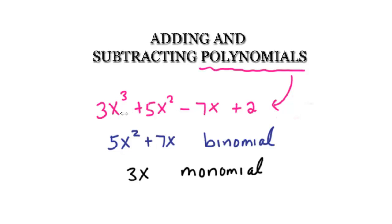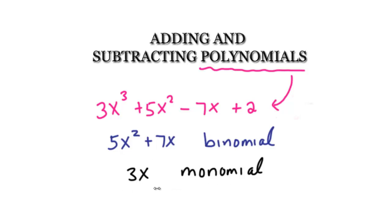The first example is a polynomial consisting of more than two terms. The second one here is a binomial because it has two terms. The last one here is a monomial because it only has one.